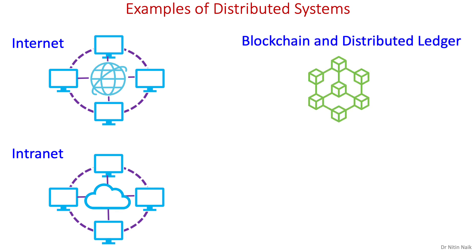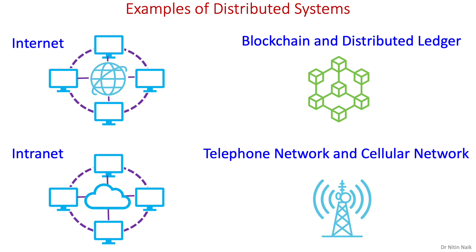Blockchain and distributed ledger are also an example of a distributed system at its design and technical level. However, more precisely, they are a decentralized system, meaning which is normally not controlled by a single authority. Finally, telephone and cellular networks are also an example of a distributed system.